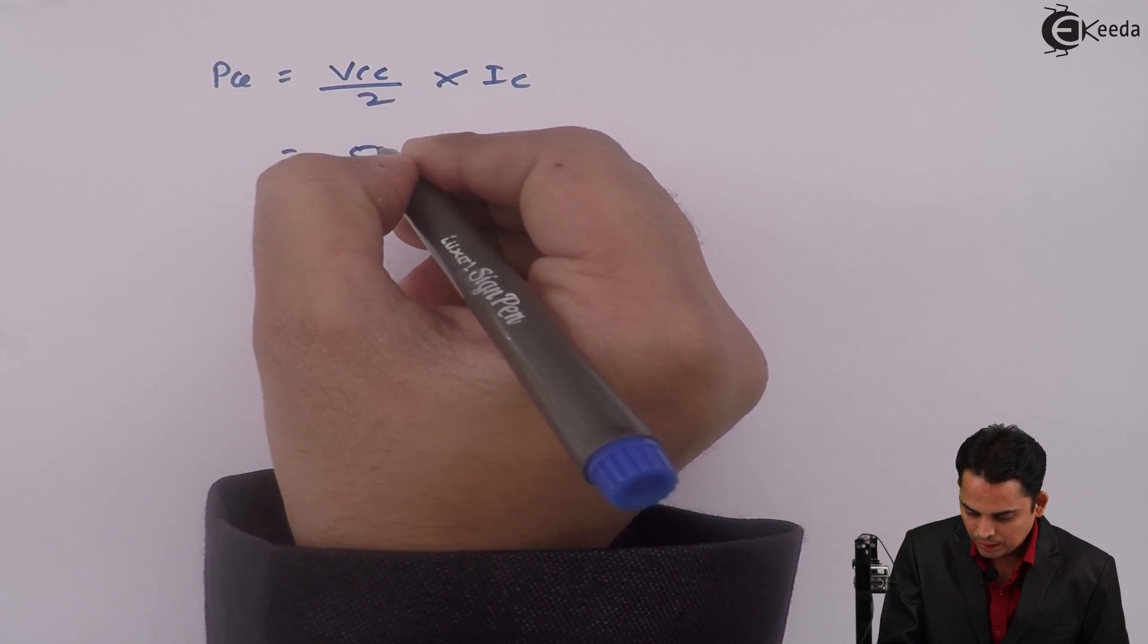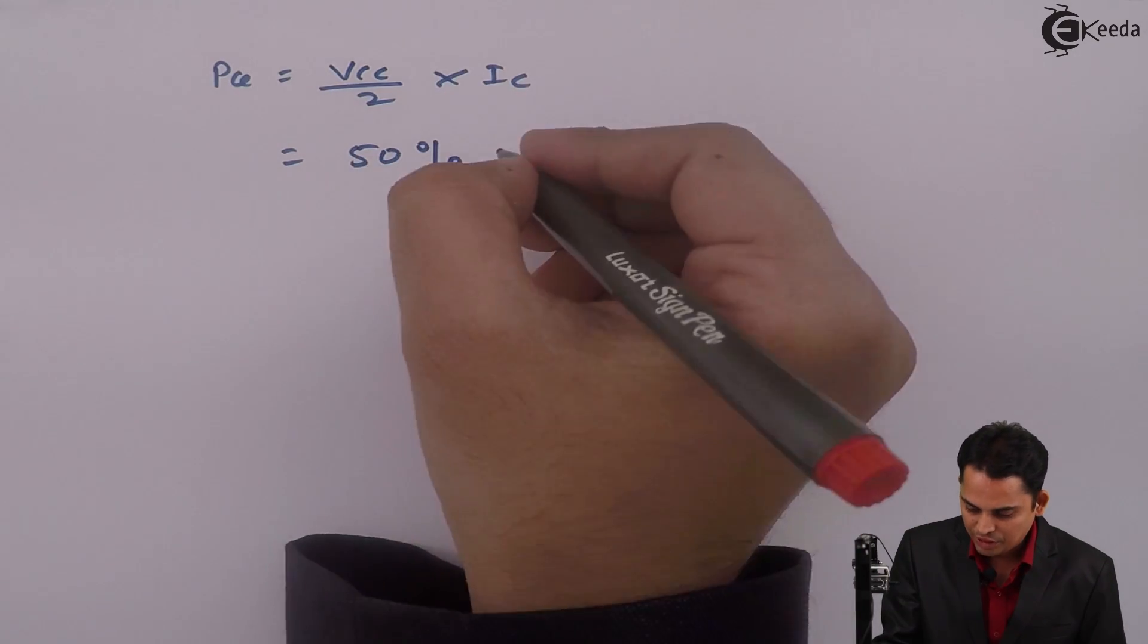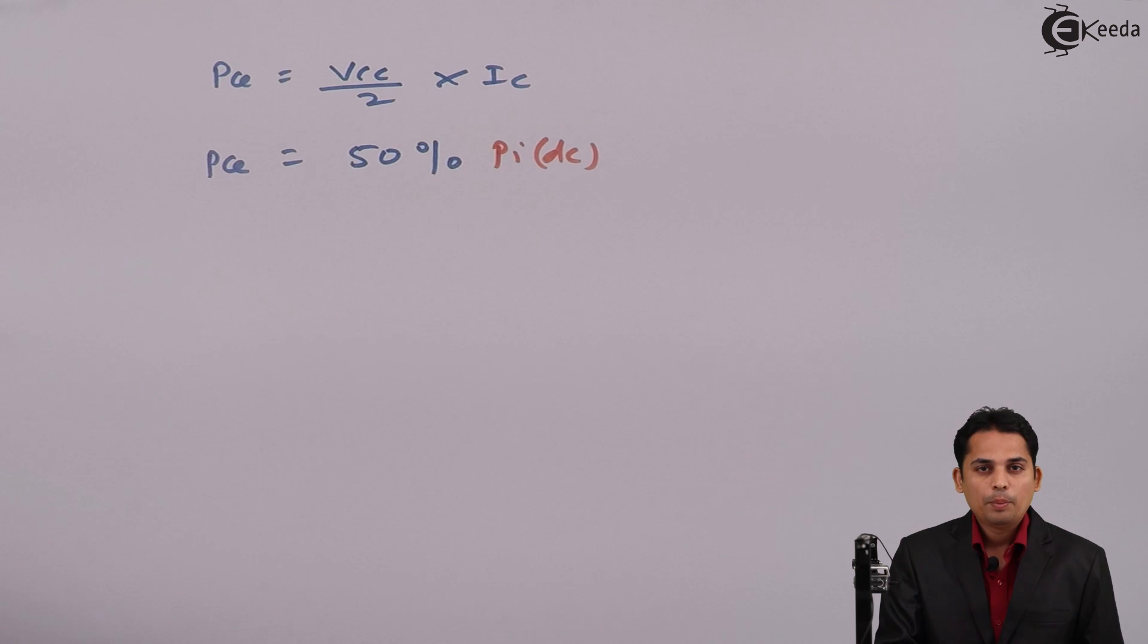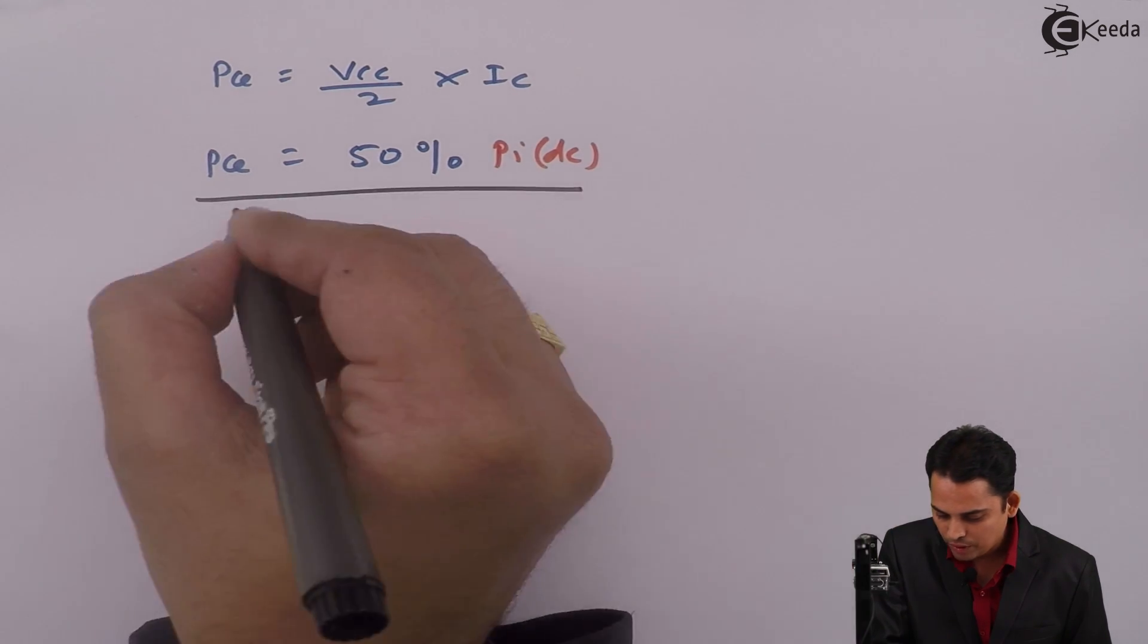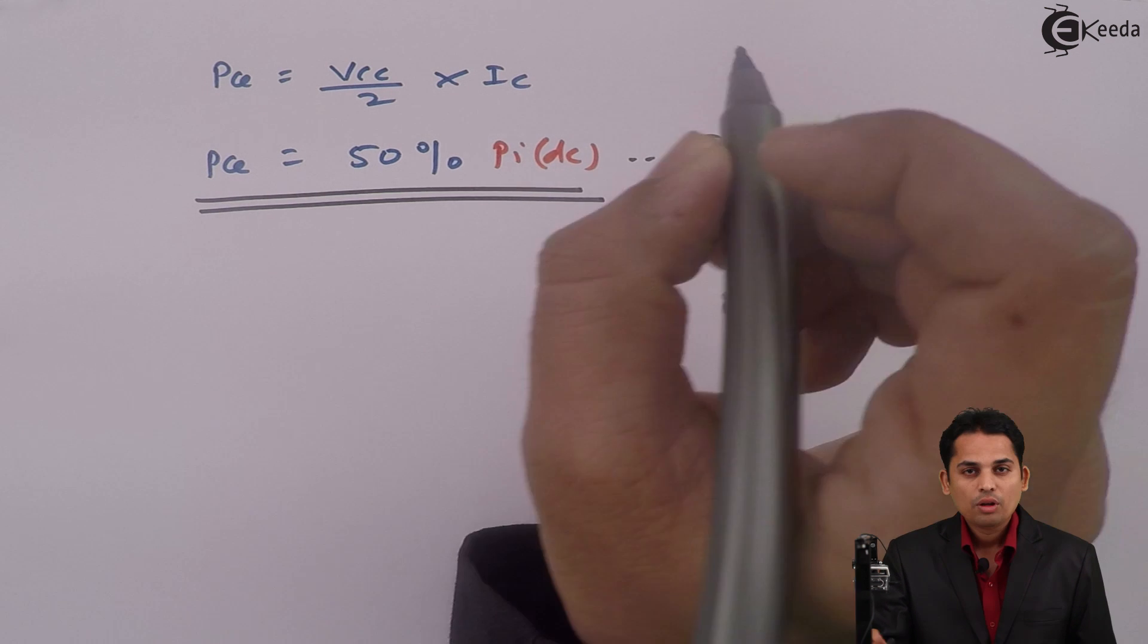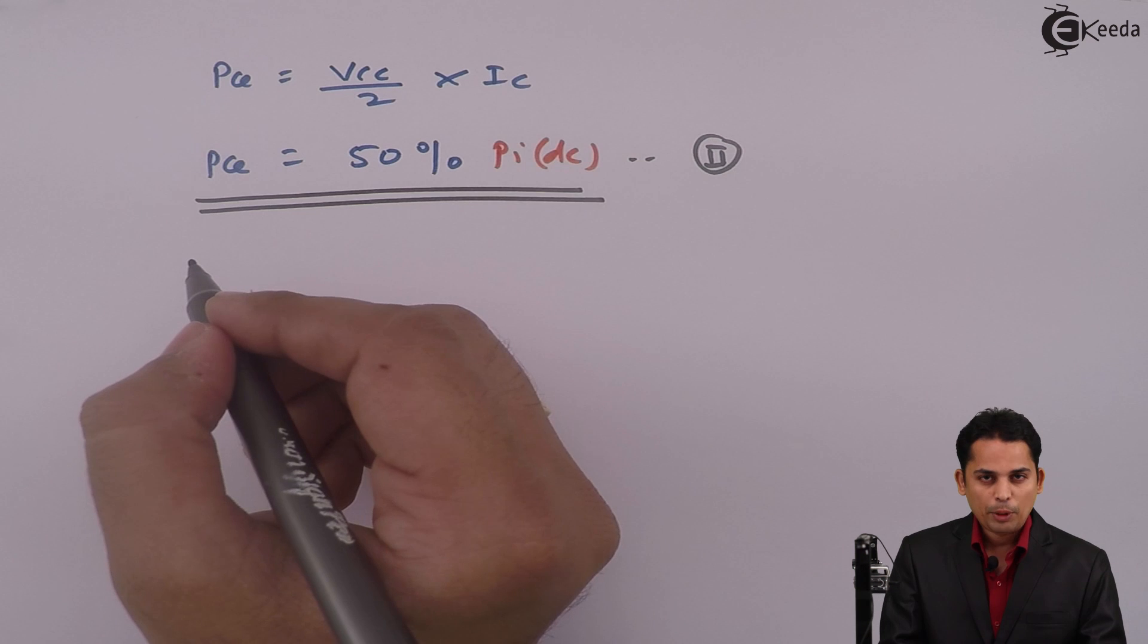Which is nothing but 50% of PIDC. Where PQ is power drop across transistor, which is equal to 50% that of supplied power. This is equation number 2. From equation 2, it is clear that whatever power is supplied, out of that 50% is drop across transistor. Because of which, temperature across transistor will increase.